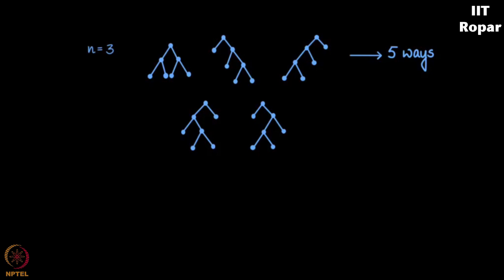Note that we use the word binary because we are concerned only about two branches coming out. As we increase n, the sequence becomes 1, 1, 2, 5, 14, 42, etc. You might want to stop the video here and examine the binary trees again.